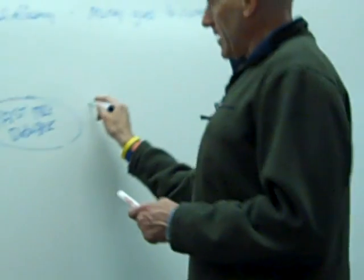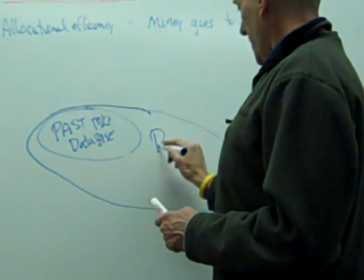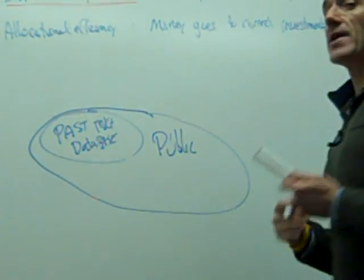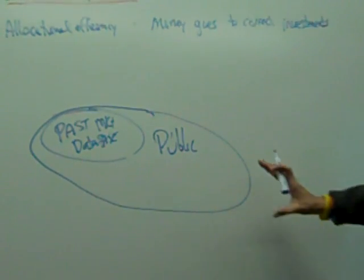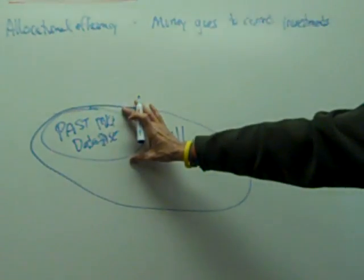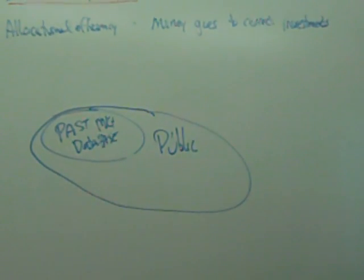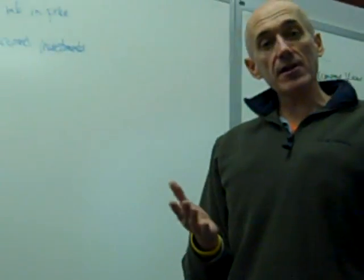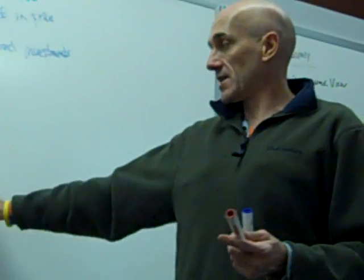The next information database we're looking at is public information, public data. And public data is a very big database. It includes everything. It includes everything that is in past data, but it also includes such things as newspaper publications, analyst reports, company press releases, you name it. You find it on the internet, you read it online, you read it in the Wall Street Journal. It is in there.